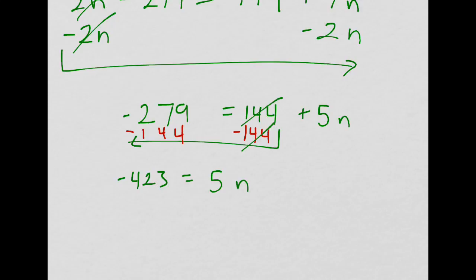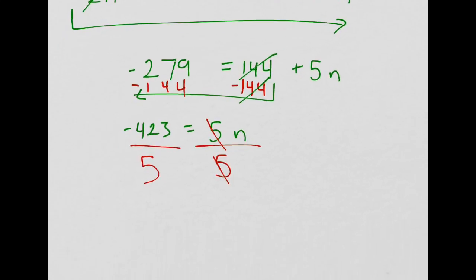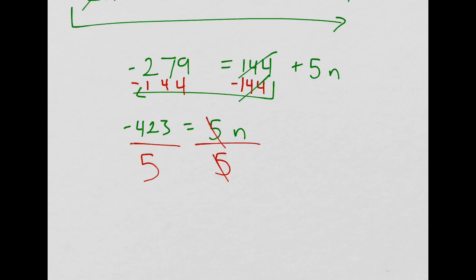And this is not going to come out evenly, but the last step is to divide by the number in front of the variable, so it cancels out to 1, but we don't have to write the 1. And so, this doesn't reduce, so this is the answer, negative 423 over 5 equals n.